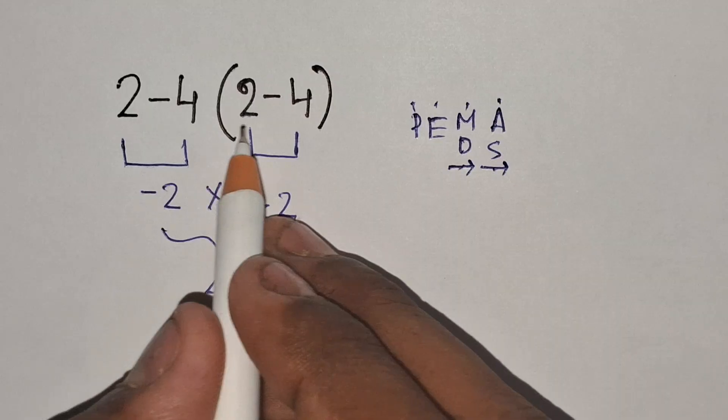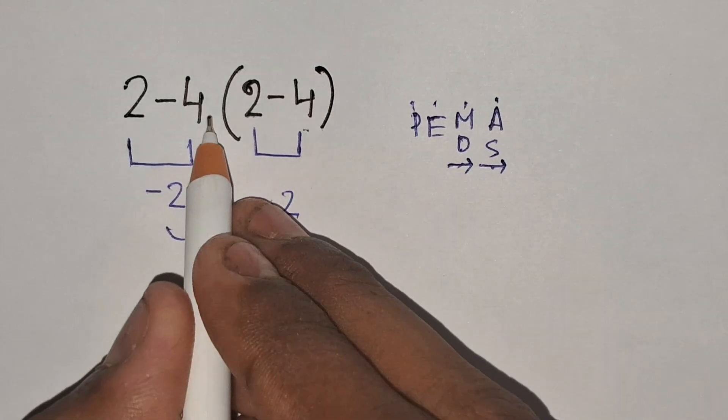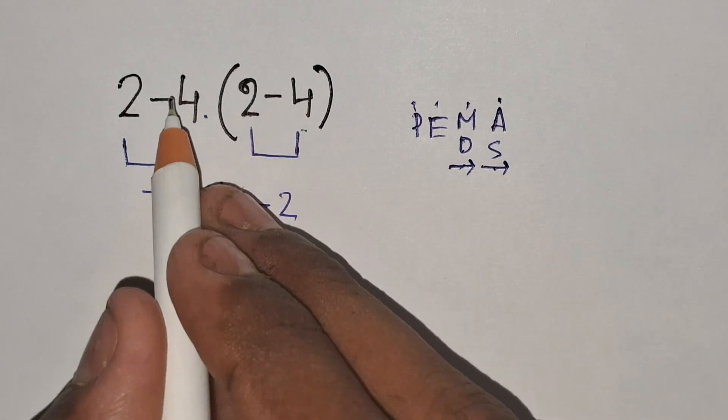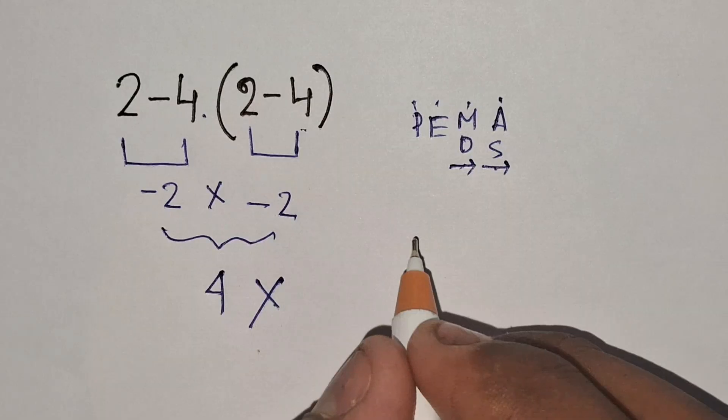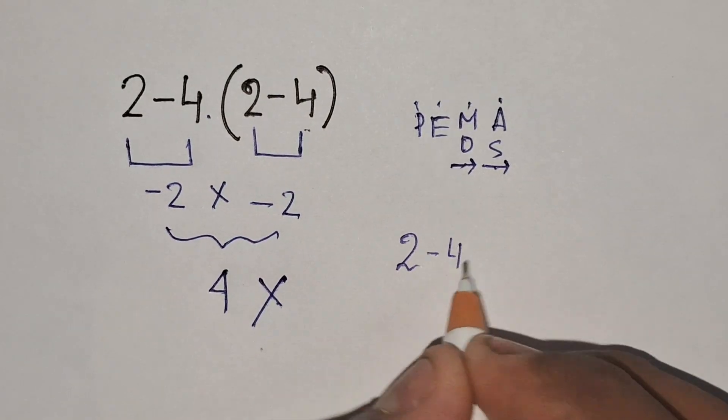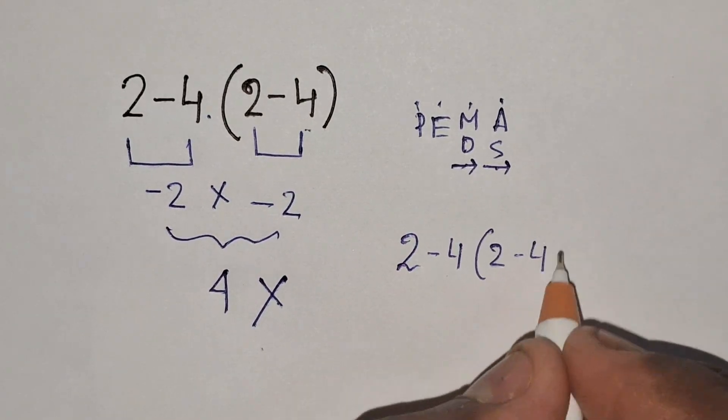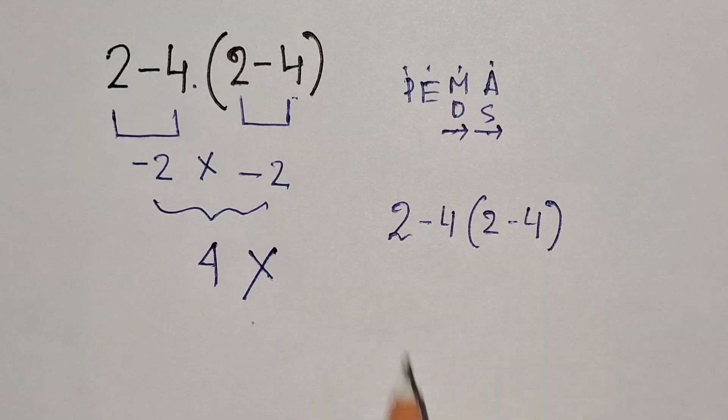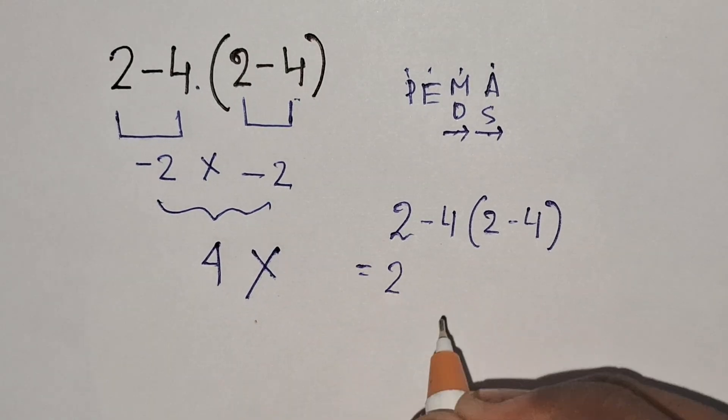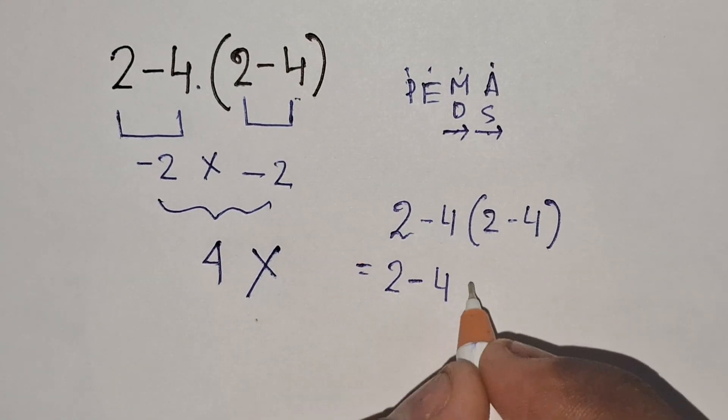Let's apply this rule and solve this expression correctly. First we solve the bracket, then multiplication, then subtraction. So 2 minus 4 times (2 minus 4) equals 2 minus 4 times minus 2.